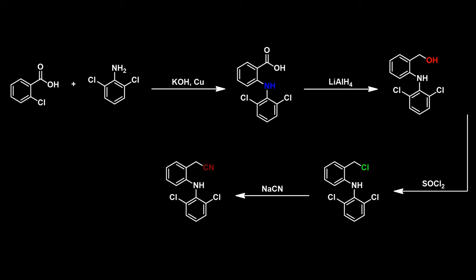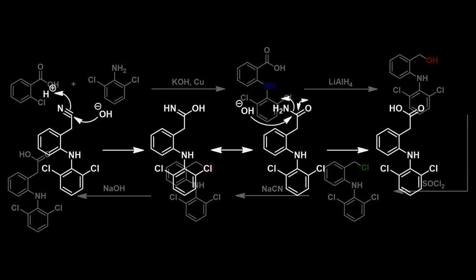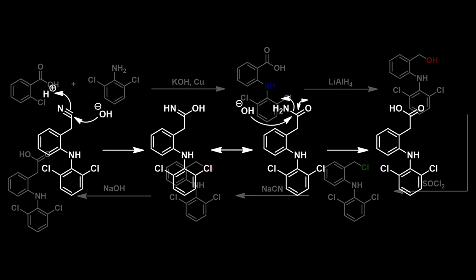The nitrile group is then hydrolyzed to form the carboxylic acid. The hydrolysis begins when a hydroxide ion attacks the electrophilic carbon of the nitrile. The resulting product can tautomerize to an amide, which can undergo further hydrolysis to form the acid, completing the synthesis.